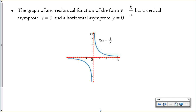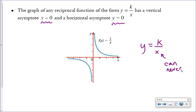The graph of any reciprocal function of the form y = k/x has a vertical asymptote at x = 0 and a horizontal asymptote at y = 0. A vertical asymptote has an equation like x = 0, and a horizontal asymptote has an equation like y = 0. This makes sense because x cannot be 0 since it's in the denominator of a fraction, and y can never equal 0 because dividing a number by x can never produce 0.